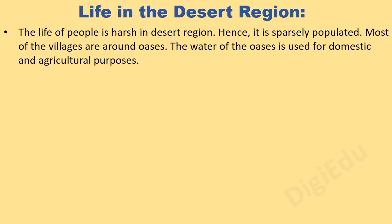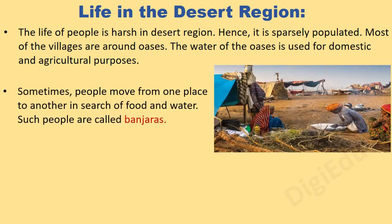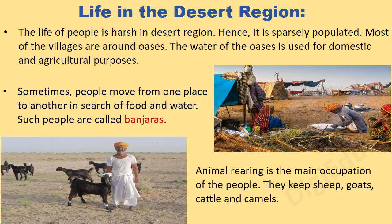Life in the Desert Region: The life of people is harsh in the desert region, and hence it is sparsely populated. Most of the villages are around oases. The water of the oasis is used for domestic and agricultural purposes. Sometimes people move from one place to another in search of food and water. Such people are called banjaras.